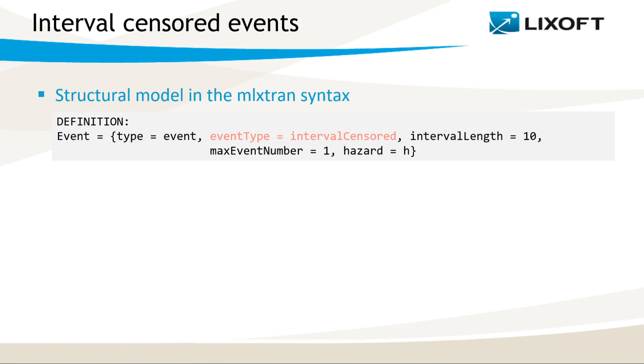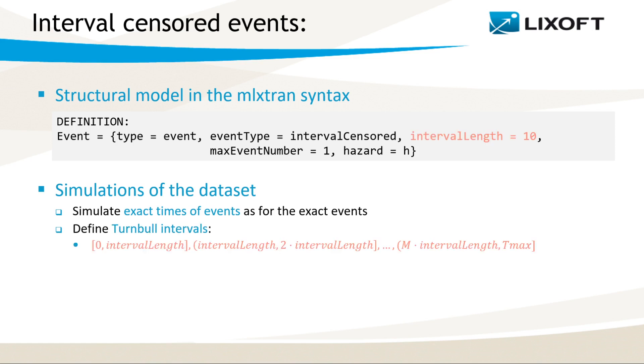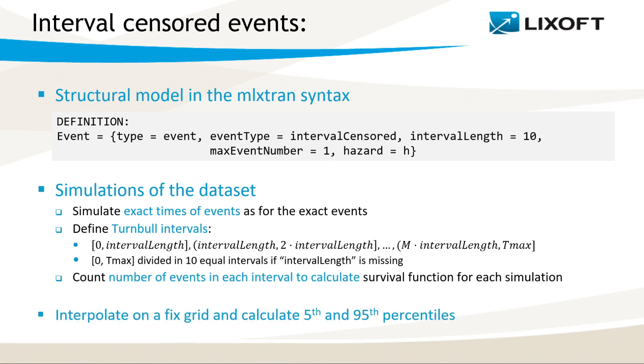If a dataset contains interval-censored events, then we have to precise it in the structural model. In the definition block, we have to add event type equal to interval-censored. To simulate the dataset, we use the same method as in the case of exact event, but instead of taking the exact times, we define intervals. If I precise in the model definition interval length, then it defines the size of these intervals. Otherwise, the interval 0 to Tmax is divided into 10 equal intervals. Then, to generate the dataset, we count number of events in each interval. Each simulated dataset is then used to calculate the survival estimator using the Turnbull method. The rest of the VPC generation is the same, that is, we interpolate survival functions on a fixed time grid and calculate the percentiles.